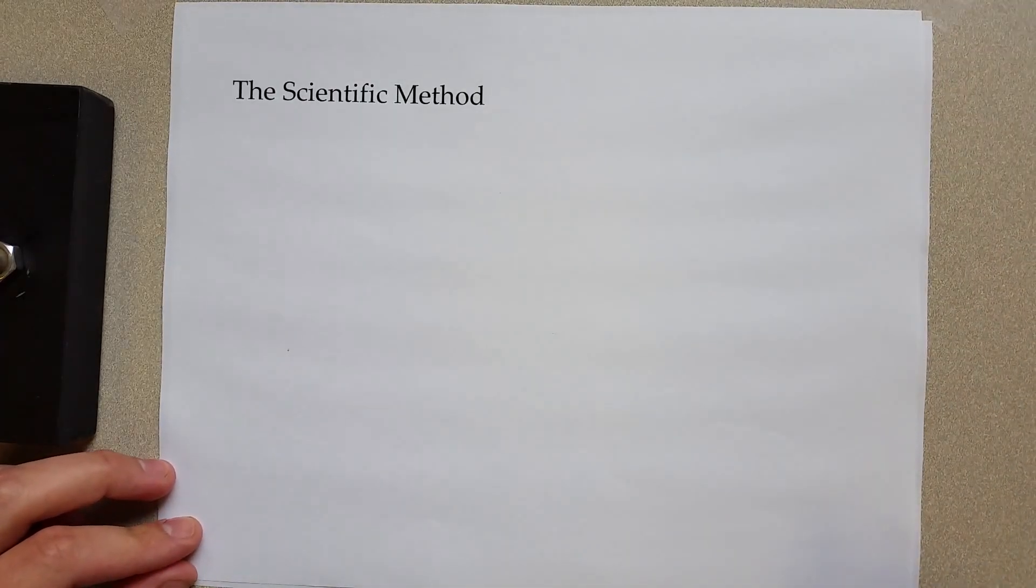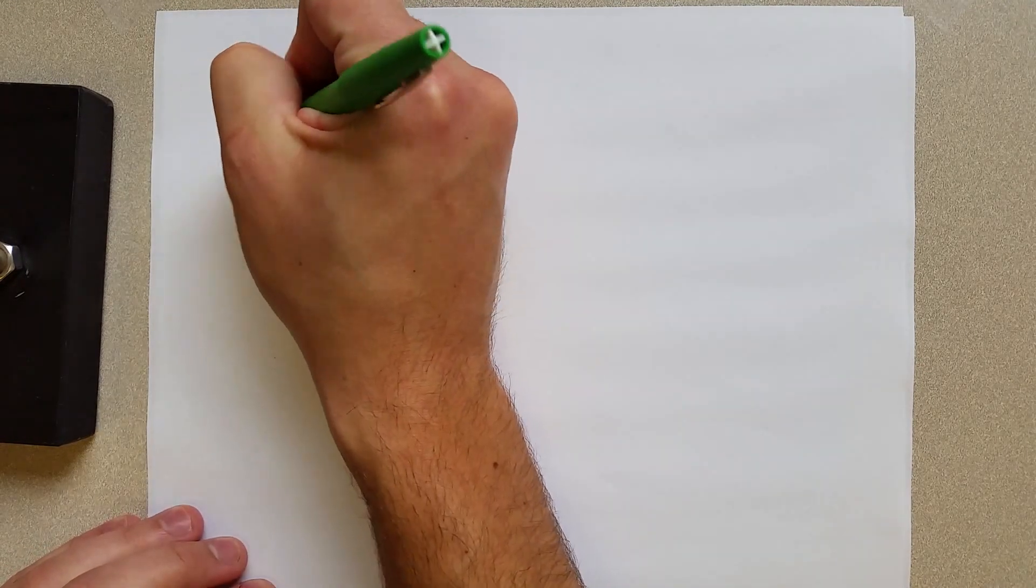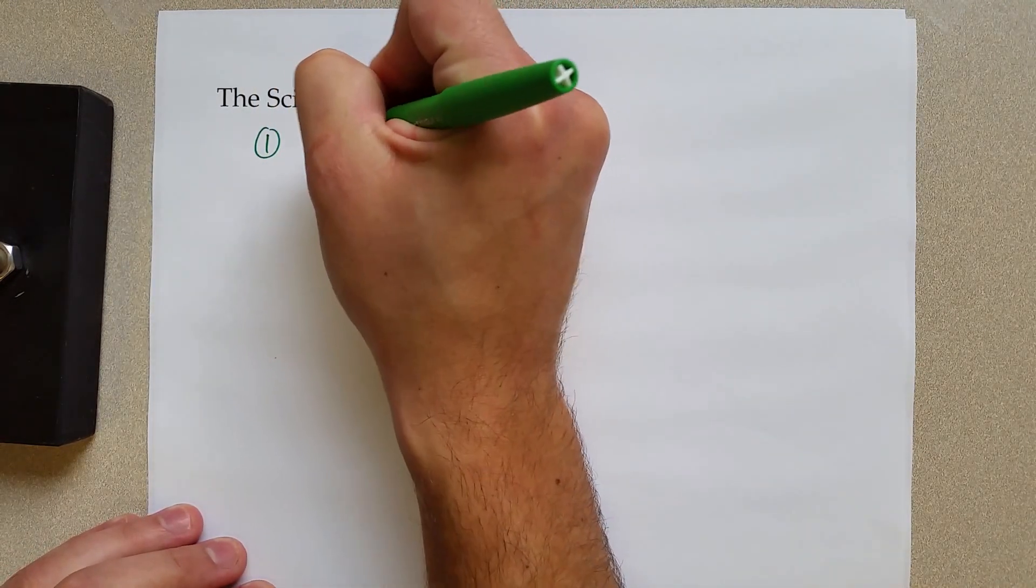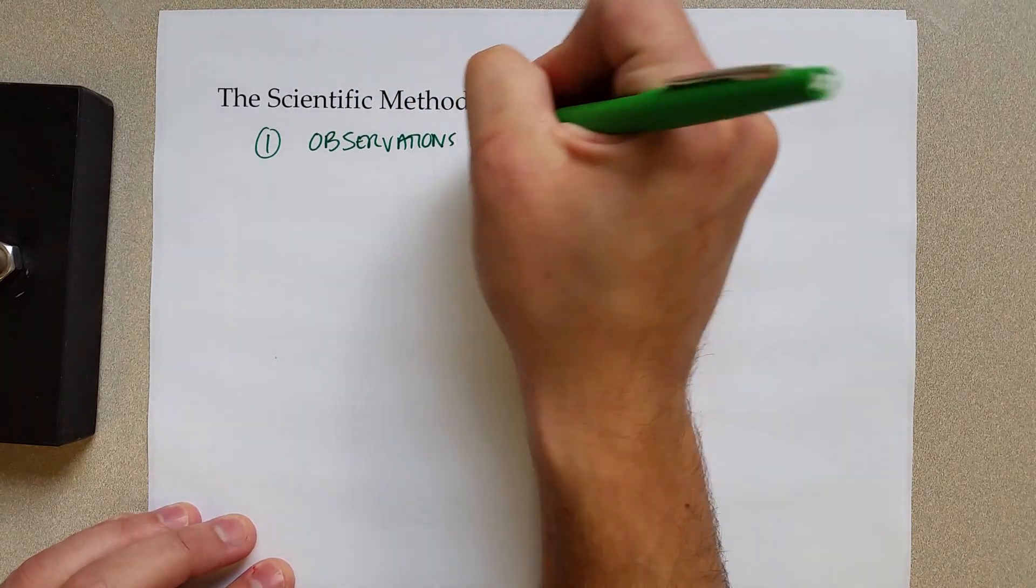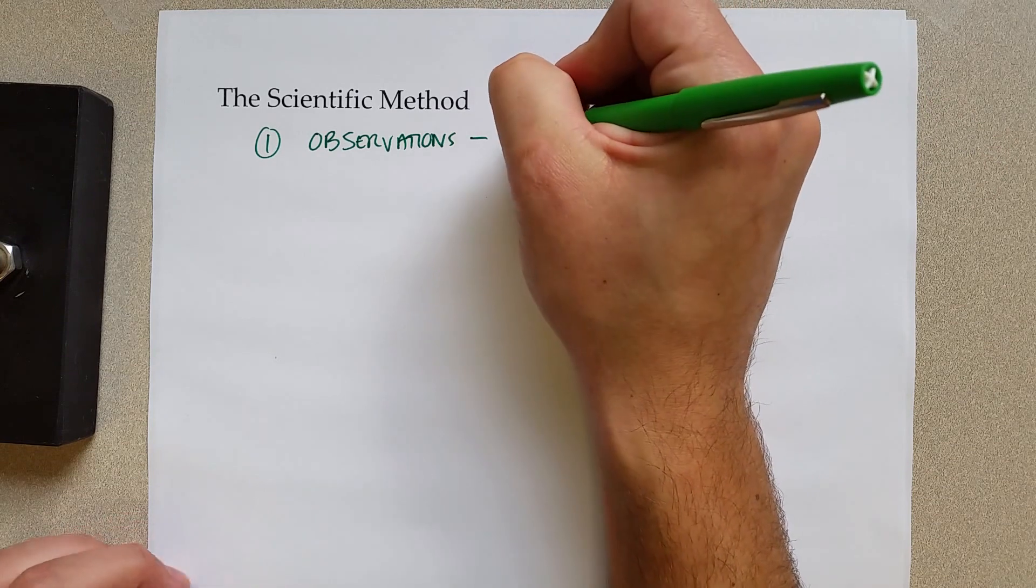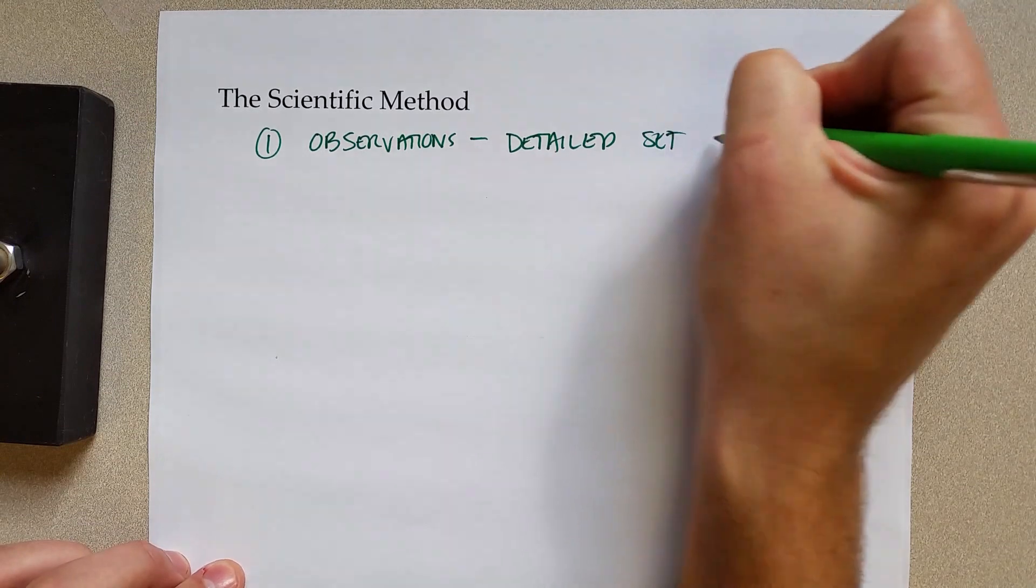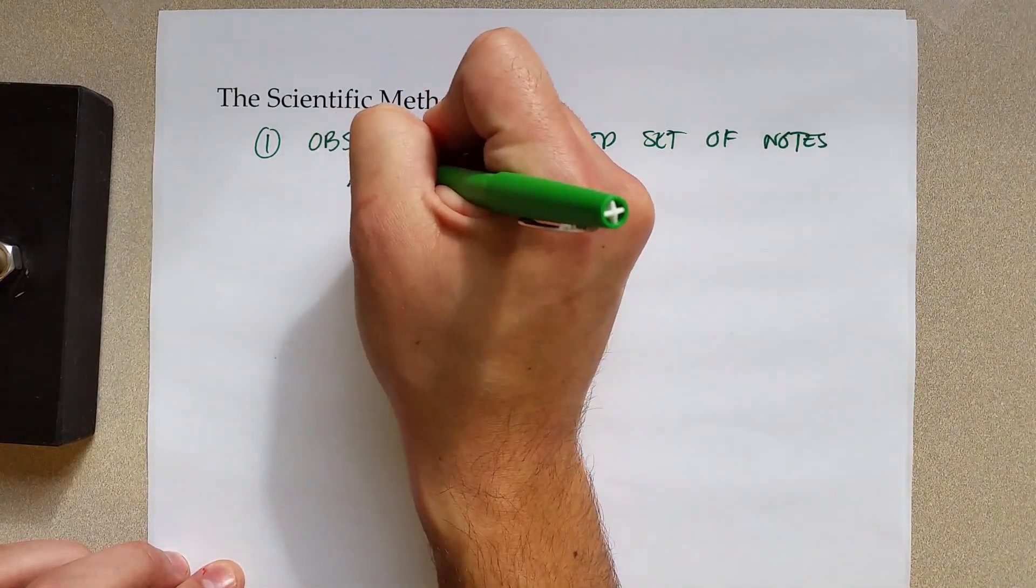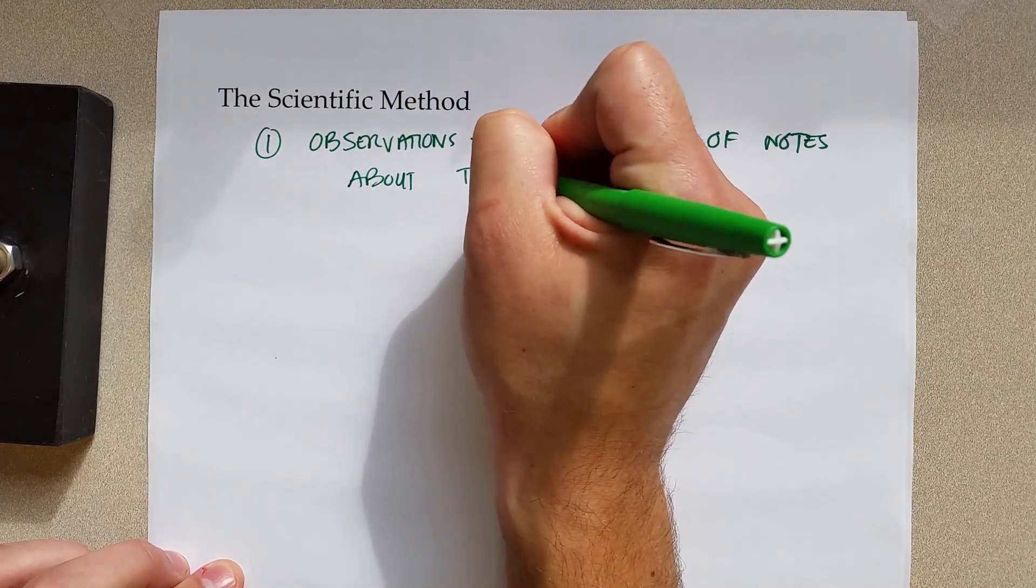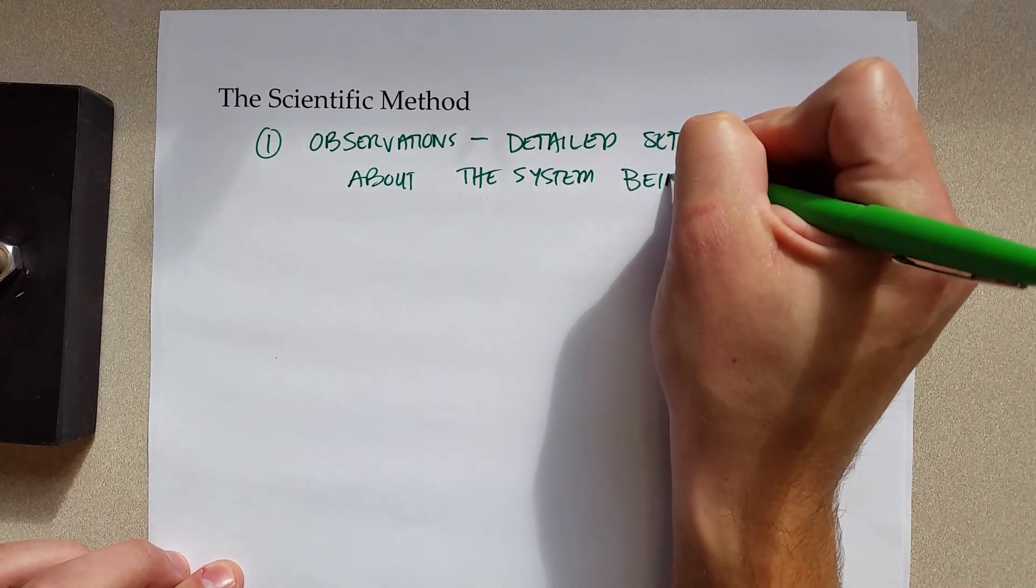The scientific method can be thought of as a procedure or following steps. The first step of the scientific method is performing observations. Observations, in essence, are a detailed set of notes about the system you want to study or the problem you want to solve.